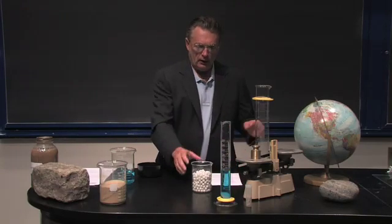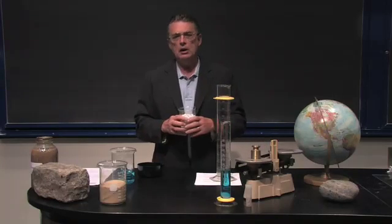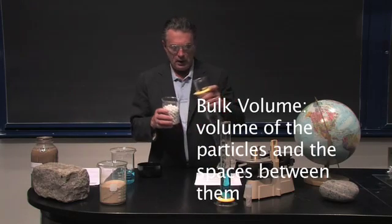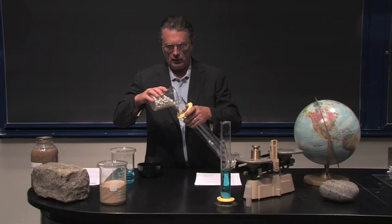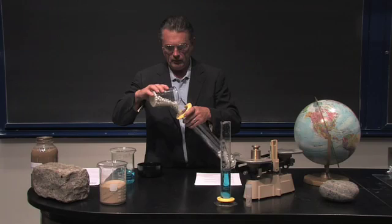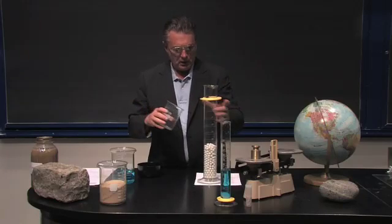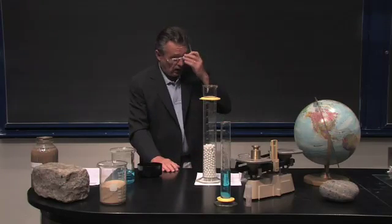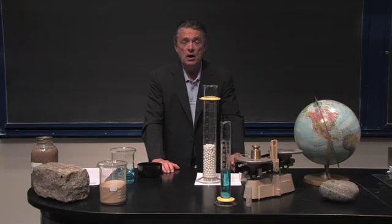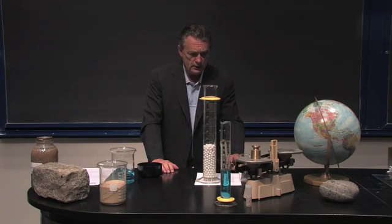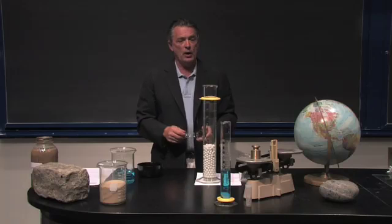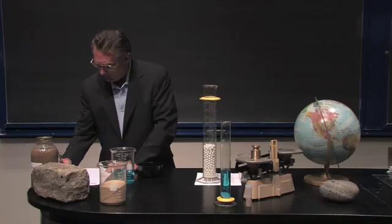The next thing we could do is determine the bulk volume — that is the volume of the particles plus the spaces between the particles. We can do that by putting the particles into this graduated cylinder. The divisions on this graduated cylinder are in increments of 10 milliliters. The volume of the beads is 440 milliliters, so please enter that on your sheet.